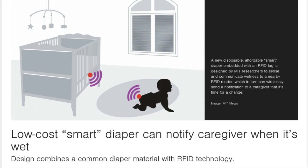The sensor consists of a passive RFID tag that is placed below a layer of super-absorbent polymer, a type of hydrogel that is typically used in diapers to soak up moisture.